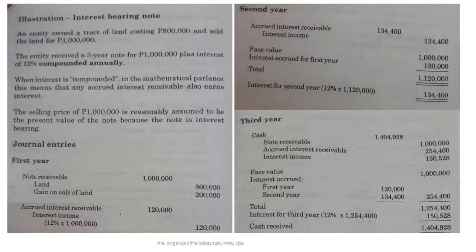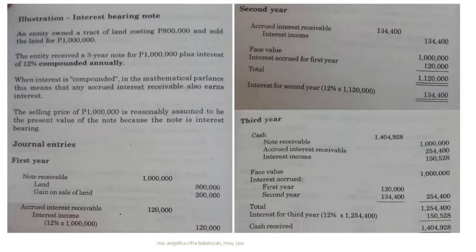With compounded interest, year one interest is 10% of 100 = 10. In year two, the principal changes to 110, so 110 × 10% = 11. In year three, the principal becomes 121, so 121 × 10% = 12.1. The interest differs each year because it is compounded — each year's interest is added to the principal for the next period.